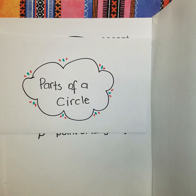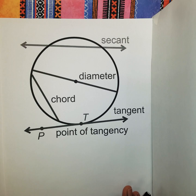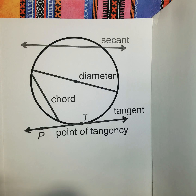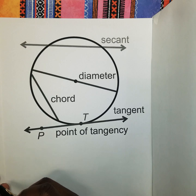Hello guys, welcome back to my channel. For this video I will be explaining the parts of a circle, which is an introductory aspect of circle theorem. Before I go into circle theorem, I want to explain the parts of a circle and their importance. Most people, when asked about a circle, will tell you about the diameter, the radius, and the circumference, but many may not be familiar with secant, chord, tangent, and the point of tangency.